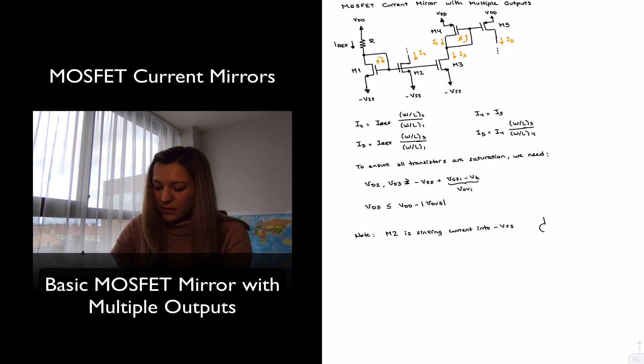the way we will represent that graphically is, this is my I2, going to negative VSS, and whatever circuit I connect to it, which I'm going to represent just with a load.